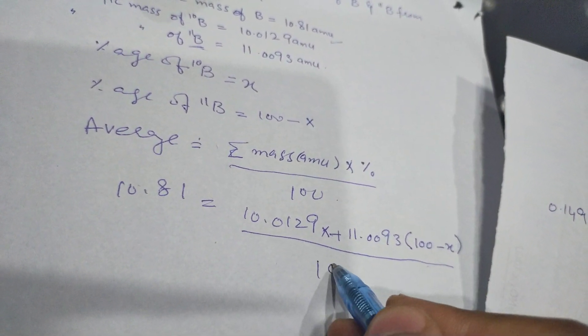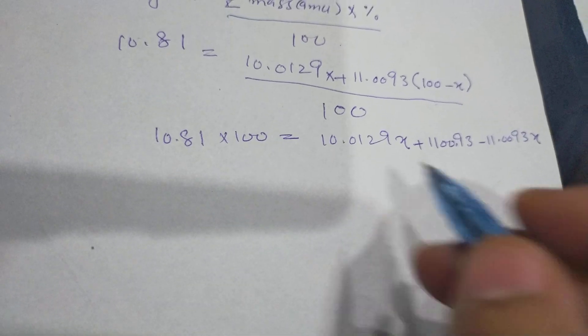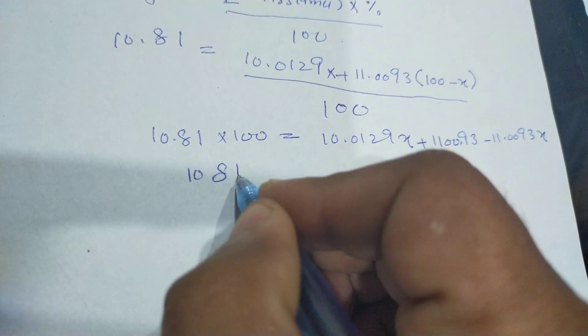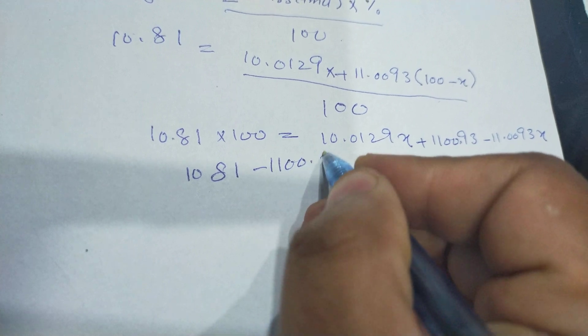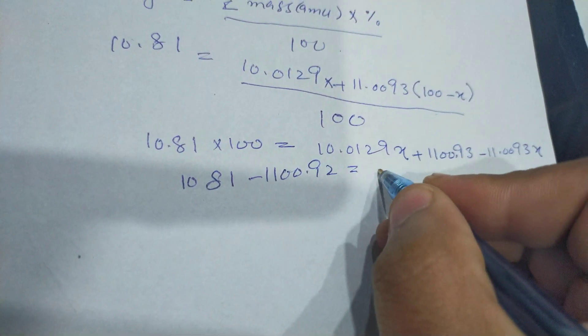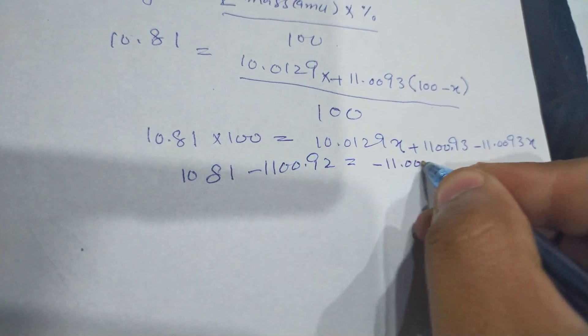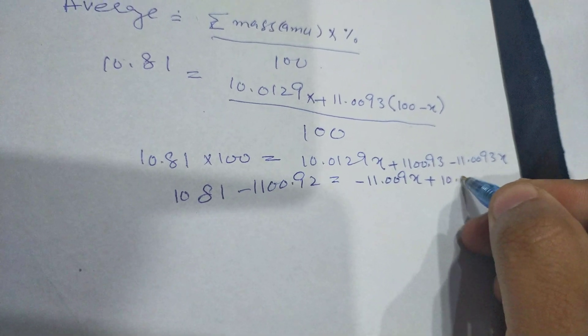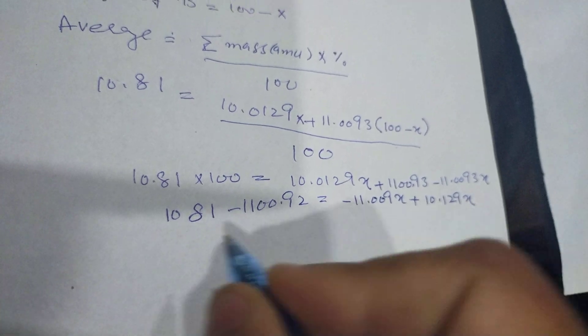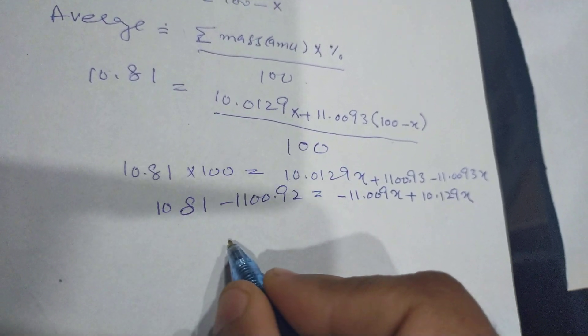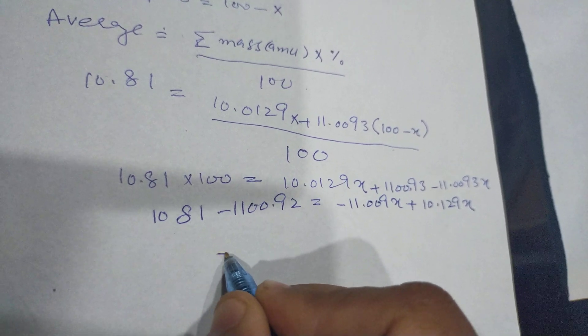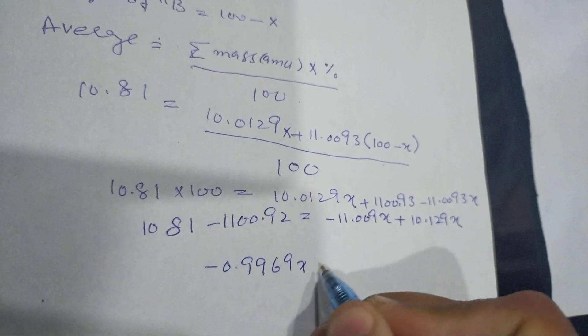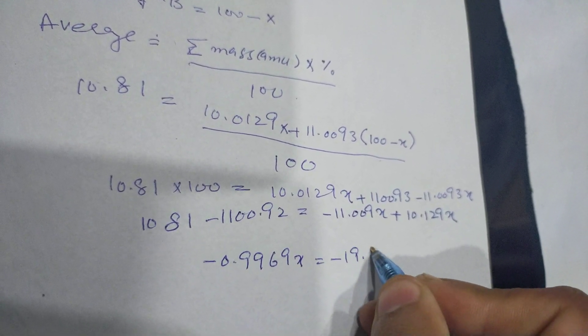Now by solving the equation we will get 10.0129X. By subtracting and adding we get 10.0129X equals minus 19.93.